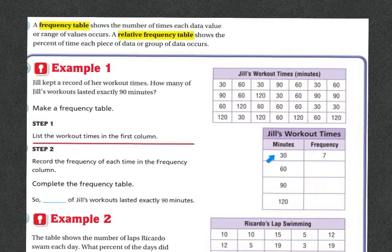Step 1: List the workout times from the first column. So you can see that they set up the 30 minutes, 60, 90, and 120 because those are the most frequencies. Now we're going to record the frequency of each time in the frequency column. So they've already done the 30, but let's make sure they did it right. There's 1, 2, 3, 4, 5, 6, 7.